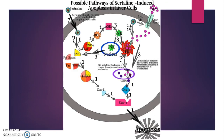While it is currently unknown which of these pathways causes liver toxicity in patients taking sertraline, it is critical for additional research to be done to determine what route is used. Determining which pathway sertraline uses to induce apoptosis in liver cells will make it possible to find a way to prevent increased liver toxicity in patients taking this commonly prescribed drug.